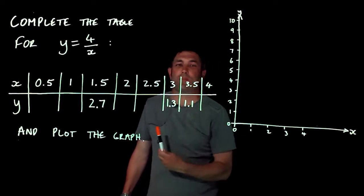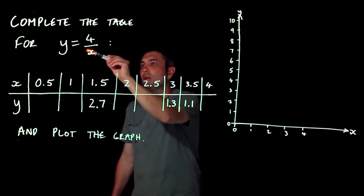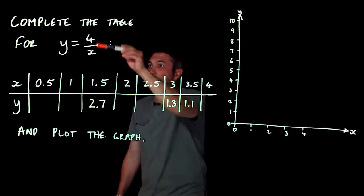Now this is what's known as a reciprocal graph. It's called a reciprocal graph because the unknown is the denominator of a fraction. So it's 4 divided by x, that's what this means.